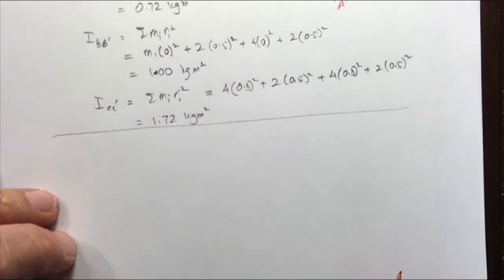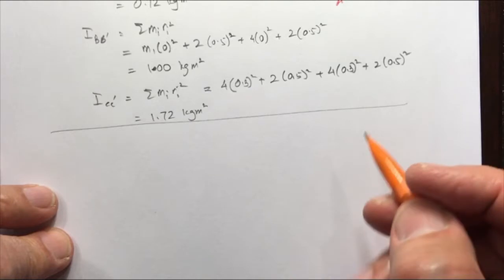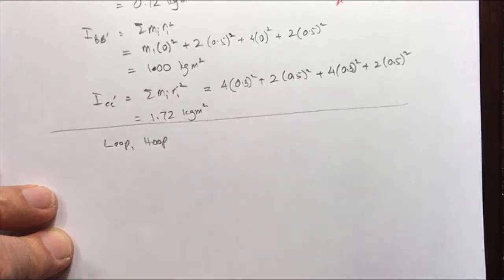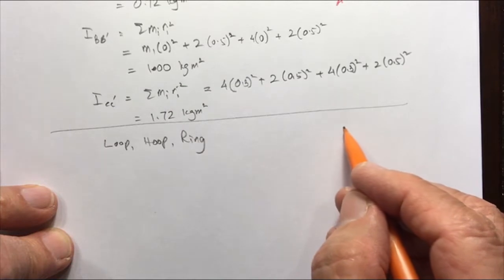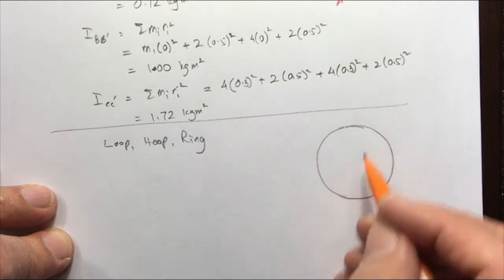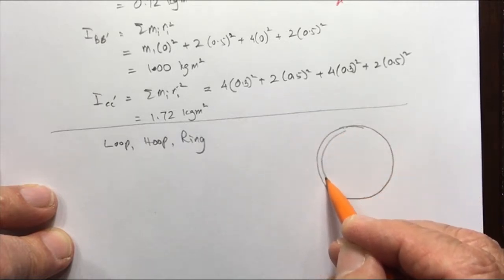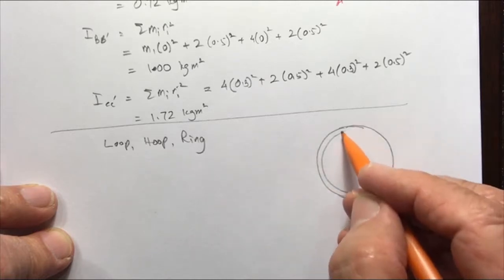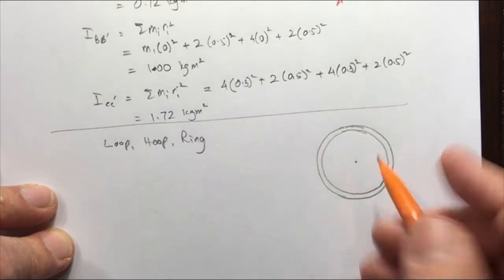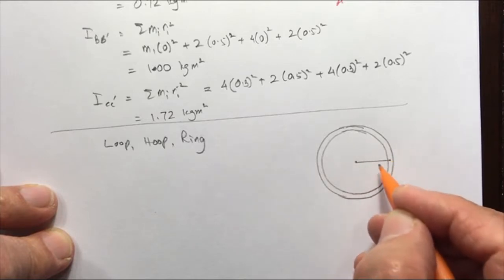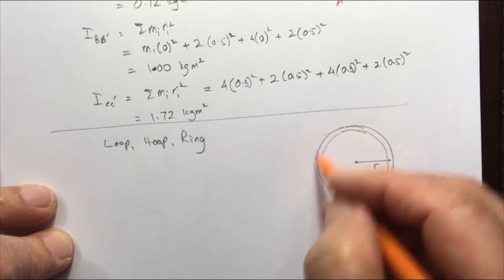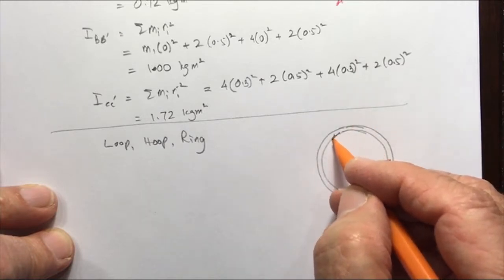Now let's consider a different case — not a collection of point masses but a loop, hoop, or ring, something like a bicycle wheel without the spokes. It has a certain thickness, which must be small for it to qualify as a thin-walled ring or thin-walled cylinder. The distance from the center to the ring is R, and the axis passes through the center so the object spins clockwise or counterclockwise.